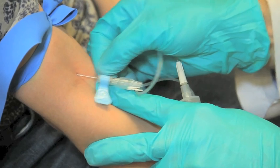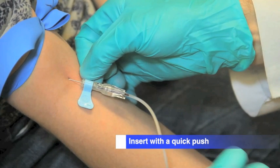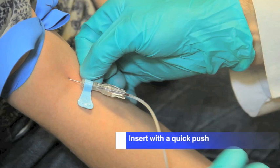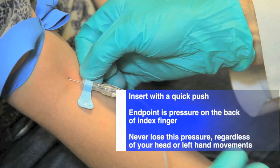When you are ready, insert the needle with a quick push rather than very slowly. Doing this motion quickly will pierce the vein rather than letting it roll away. Use a short, abrupt motion by holding the wing of the needle in between your right index finger and thumb and extending them quickly. The endpoint for advancement of the needle is pressure on the dorsal aspect of your right index finger from the patient's antecubital fossa. Never lose this pressure, regardless of your head or left hand movements. The movements of your right hand should be dissociated from the rest of your body to maintain stability of the needle during the blood draw.